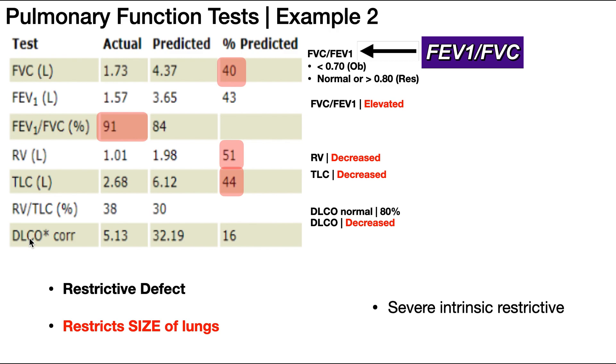The DLCO value should also be about 0.8, or 80%. In this first example, it is obviously very low.